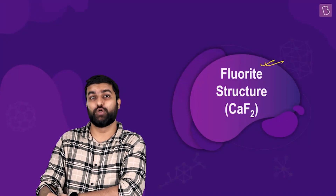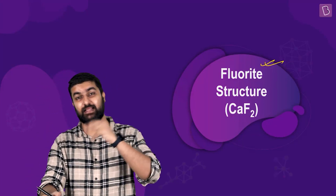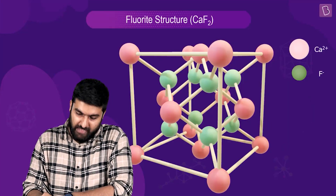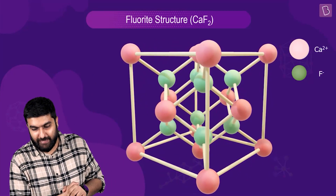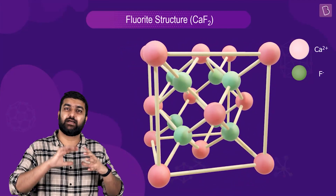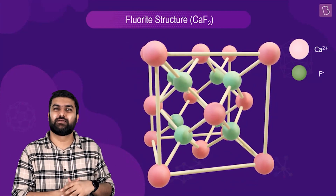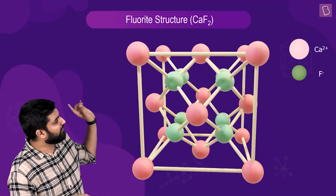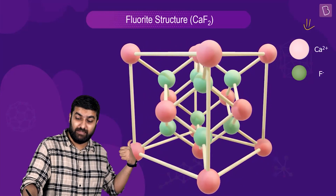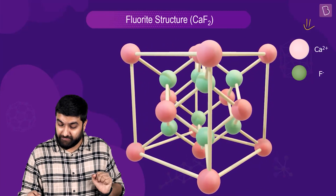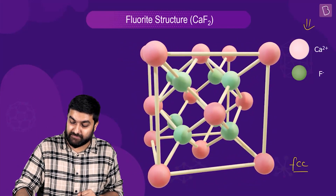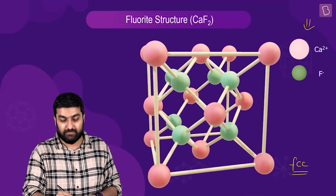Let's look at the structure of CaF₂ — the fluorite structure. What you have here, if you look clearly, you'll quickly realize that the roles have flipped. Notice that the cation is the pink one — the cation is forming the lattice. If you just focus on the pink ones, it's forming an FCC lattice.